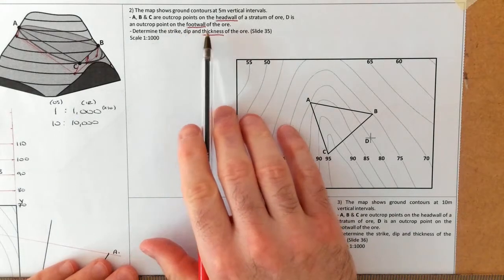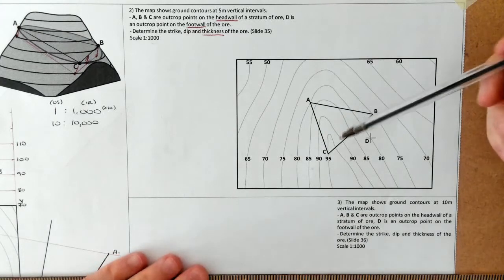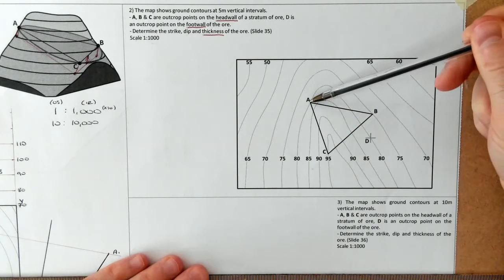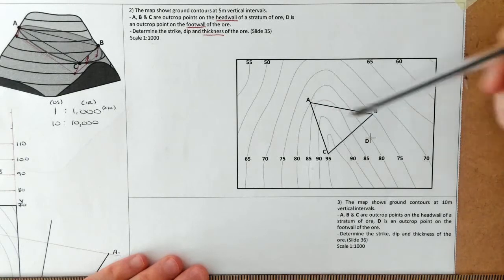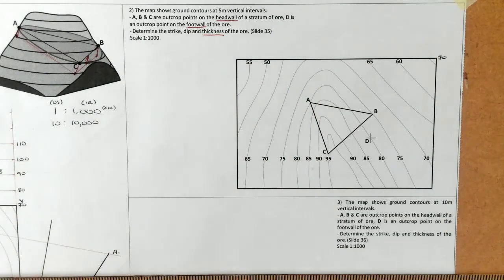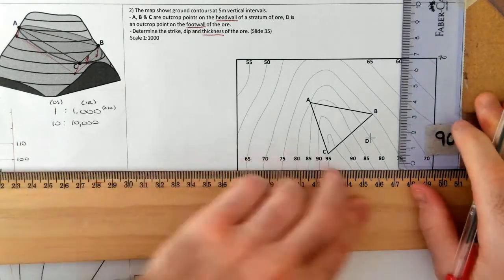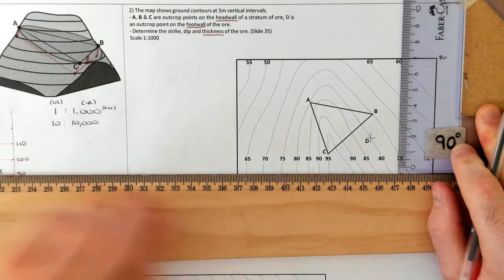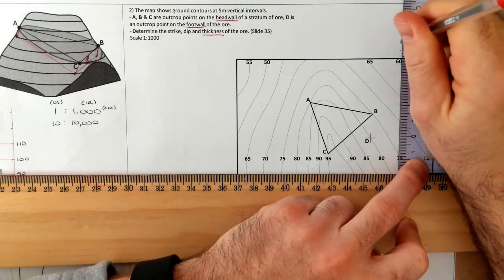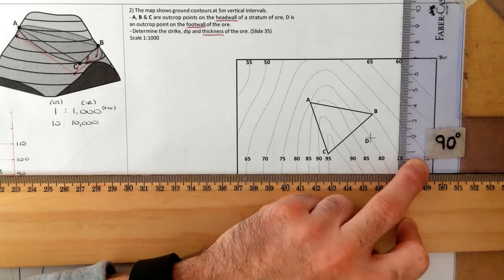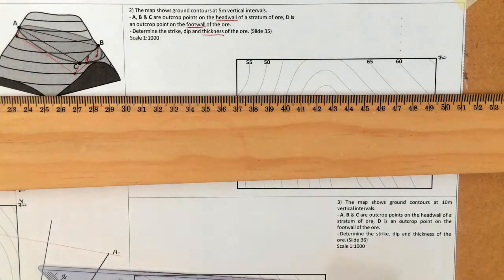We're going to complete the same method: strike, dip, and then determine the thickness at the very end. A is at a height of 80, B is at 75 — so B is the lowest — and C is at 95. I come to the side and mark 70 here, then measure up in 5 millimeter increments: 75, 80, 85, 90, 95, 100. I'll draw those lines in — these are my contour lines as they appear in the elevation view.